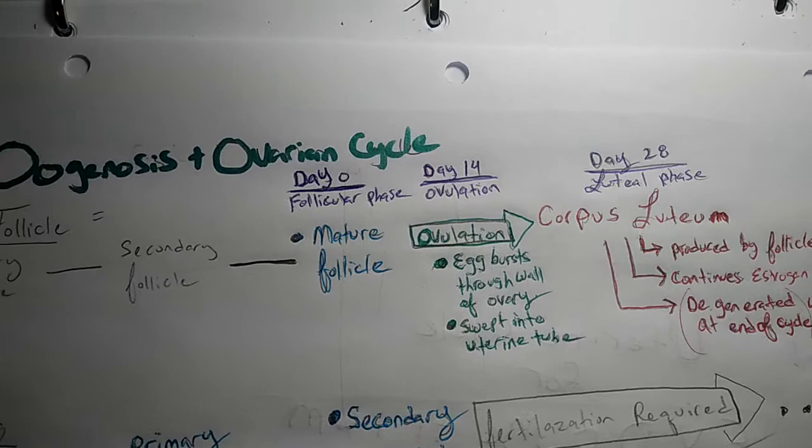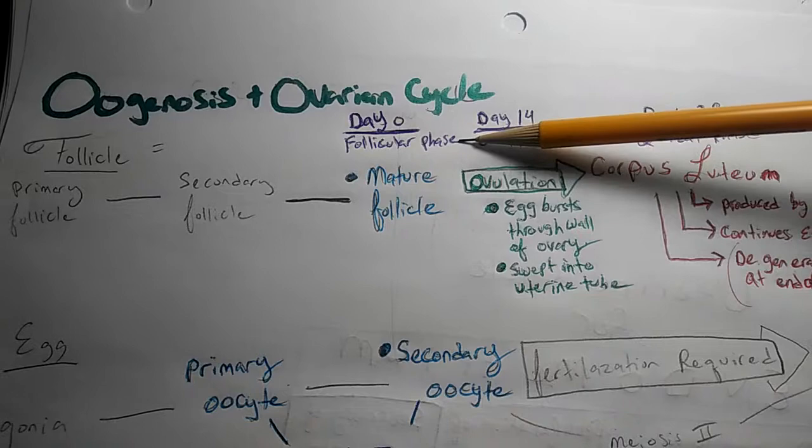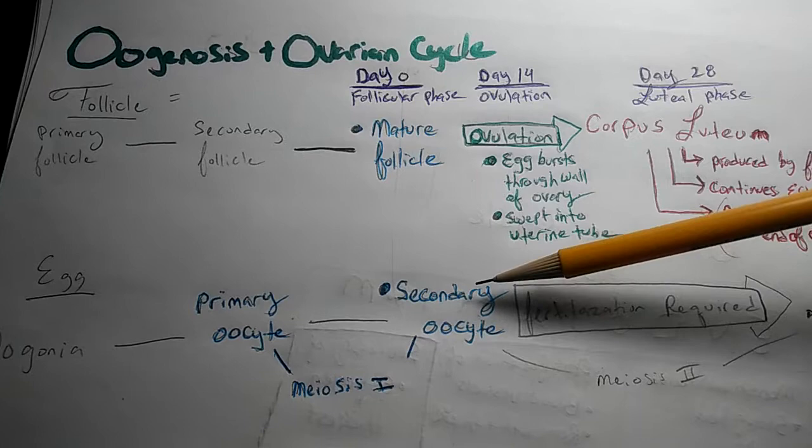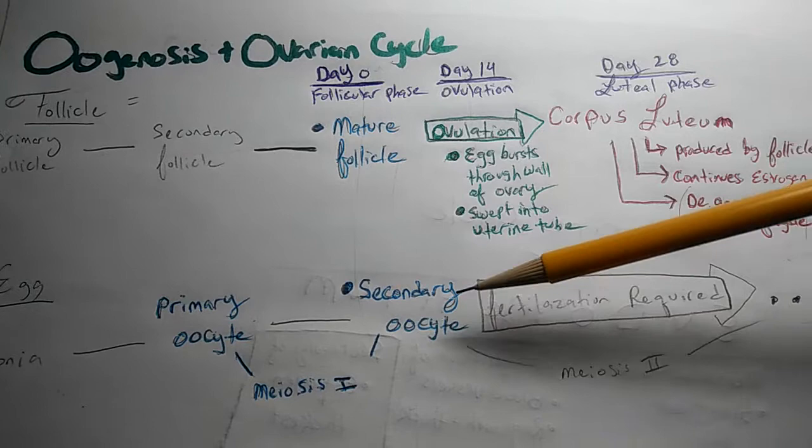Now for the ovarian cycle, we have day 0, the follicular phase. It includes the maturation of the follicle, and it also includes the primary oocytes becoming a secondary oocyte through the meiosis 1. So see how it lines up nicely.